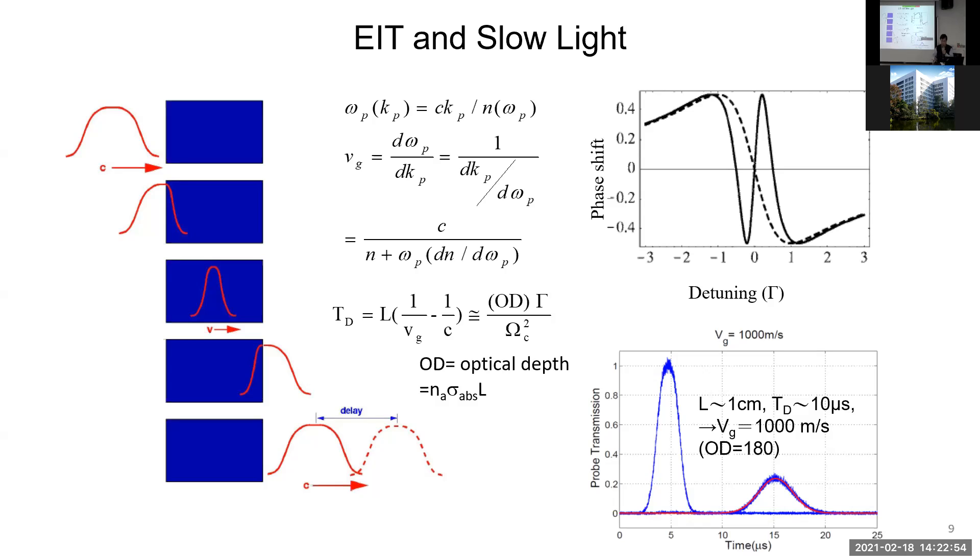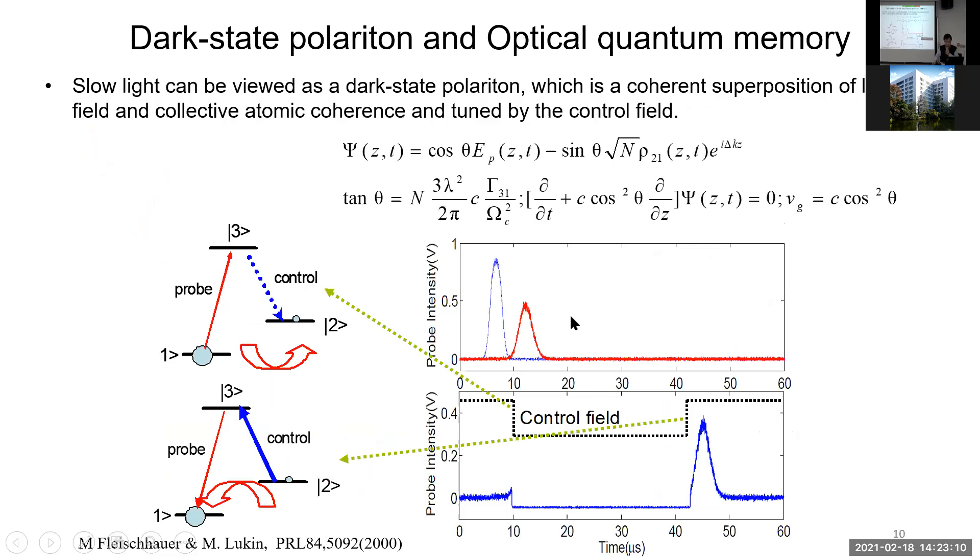Here's an example. In an experiment you have about one centimeter long sample, and the group delay time is around 10 microseconds. In this case the group velocity is about one kilometer per second.